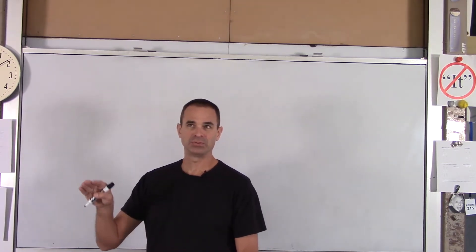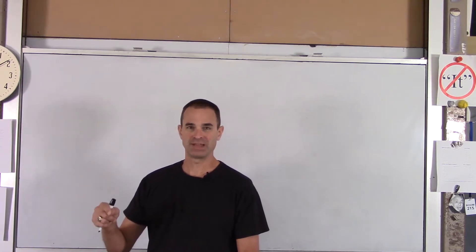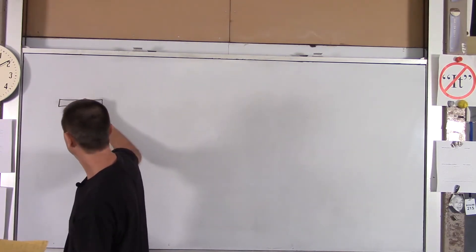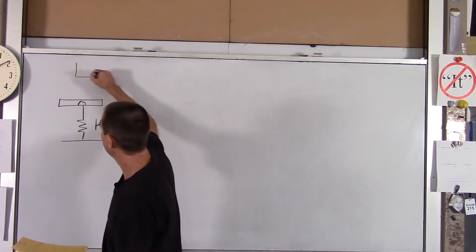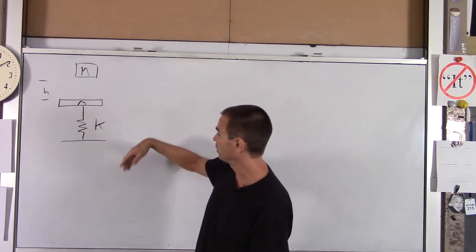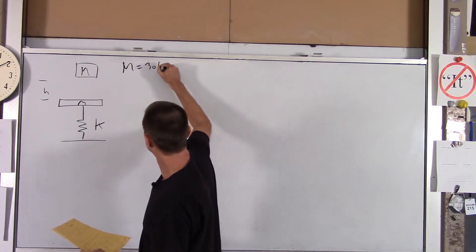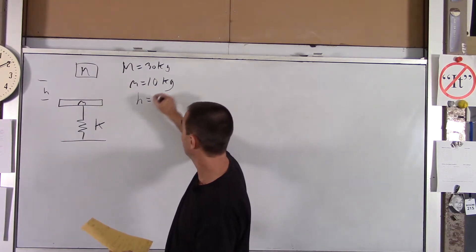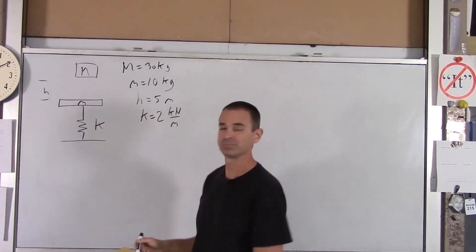We're going to have a big block dropping onto a small block. The small block is supported by a spring, and we're going to find out the max compression of that spring after the big block has crashed into the small block. You have a small block or platform — little m — being supported by a spring with spring constant k, and the big block is dropped onto it from some height h above the platform. Big M is 30 kilograms, little m is 10 kilograms, the height above the platform is 5 meters, and the spring constant k is 2 kilonewtons per meter.